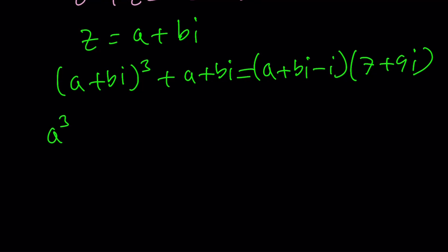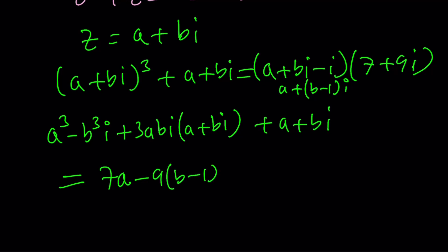I want to cube it this way: a³, then cube bi, which gives me -b³i, because i³ is -i. And now plus 3abi multiply by a+bi. I just used my famous formula. On the right hand side, I'll write this as a+bi-i. I want to multiply in a smart way. I'm going to distribute a over the 7, that gives me 7a. Then I'll distribute b-1 times i over 9i. That gives -9 times b-1, because i² is -1. Then multiply a times 9i, which gives 9ai. Finally, multiply 7 by b-1i, which gives 7b-7i. That's my number on the right hand side.